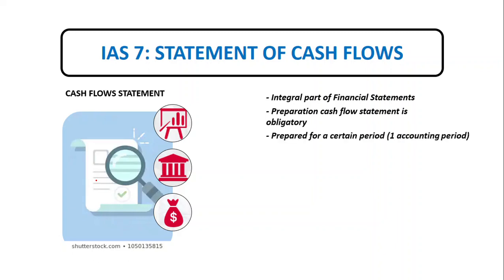The cash flow statement is prepared for a certain period of time — one accounting period, for example from January 1, 20XA up to December 31, 20XA. There are also companies that report their financial statements on a fiscal period, so the ending month is not necessarily December 31 but could be any other month of the year.